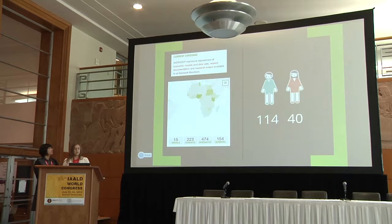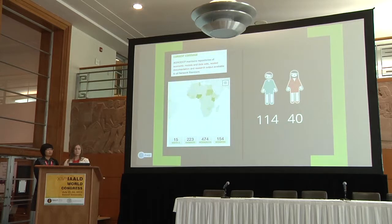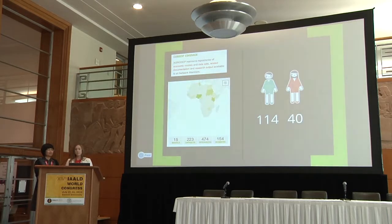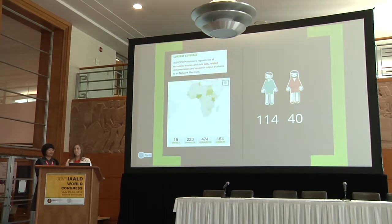Right now on the website we feature 15 models. Most of them are housed directly on Agridep.org and a lot of them were created specifically for us. For external ones we just provide members access, and one of those is the GTAP model if you know anything about economic trade. We have over 200 data sets and almost 500 resources. A lot of the data sets and resources we point to external sources to avoid copyright issues.